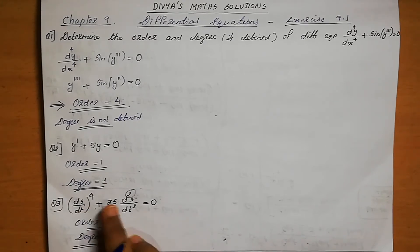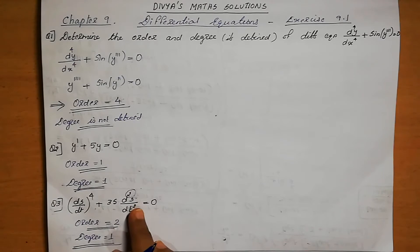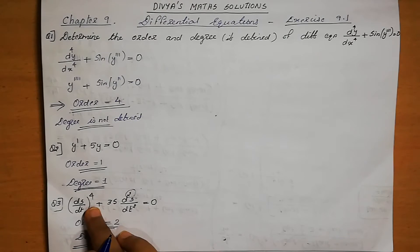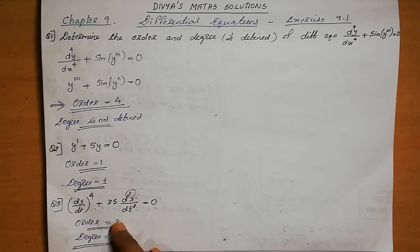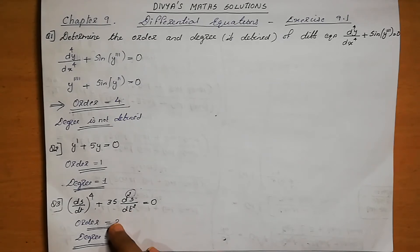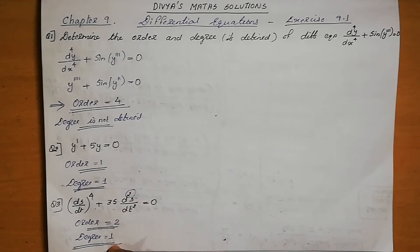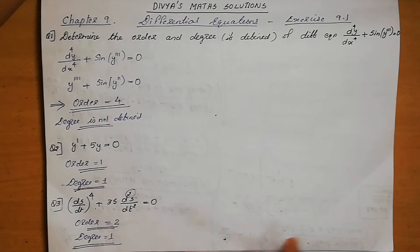We select the order by finding the highest order derivative in the given differential equation. Then, since this is a polynomial equation, we check the power of that highest order term, which is 1. Therefore, the degree is 1.